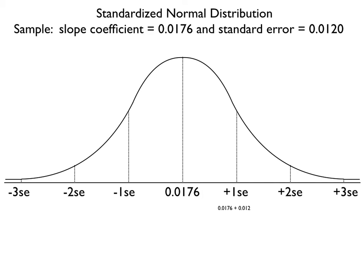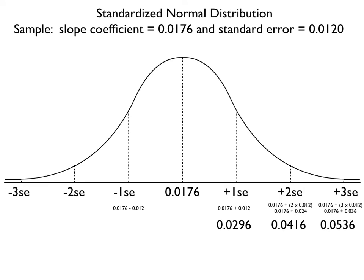The standard error is 0.012, so we add that to the mean to get the value one standard error above the mean. We do the same for two standard errors and three standard errors, and we also do that on the negative side. We can start seeing what the distribution looks like.